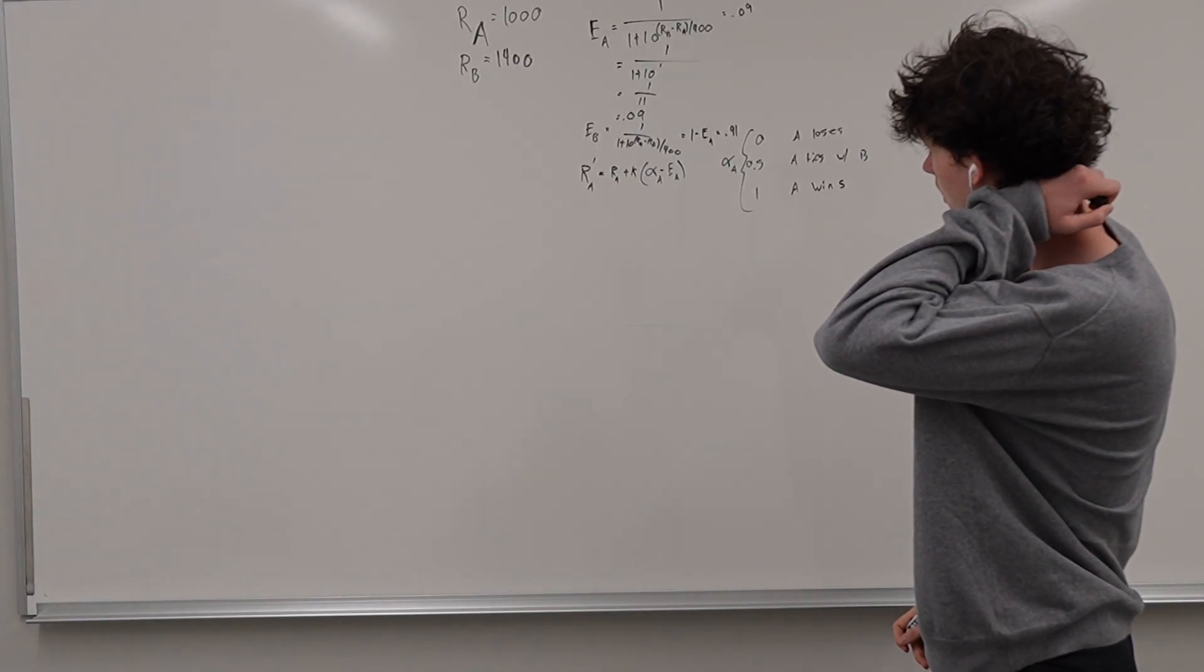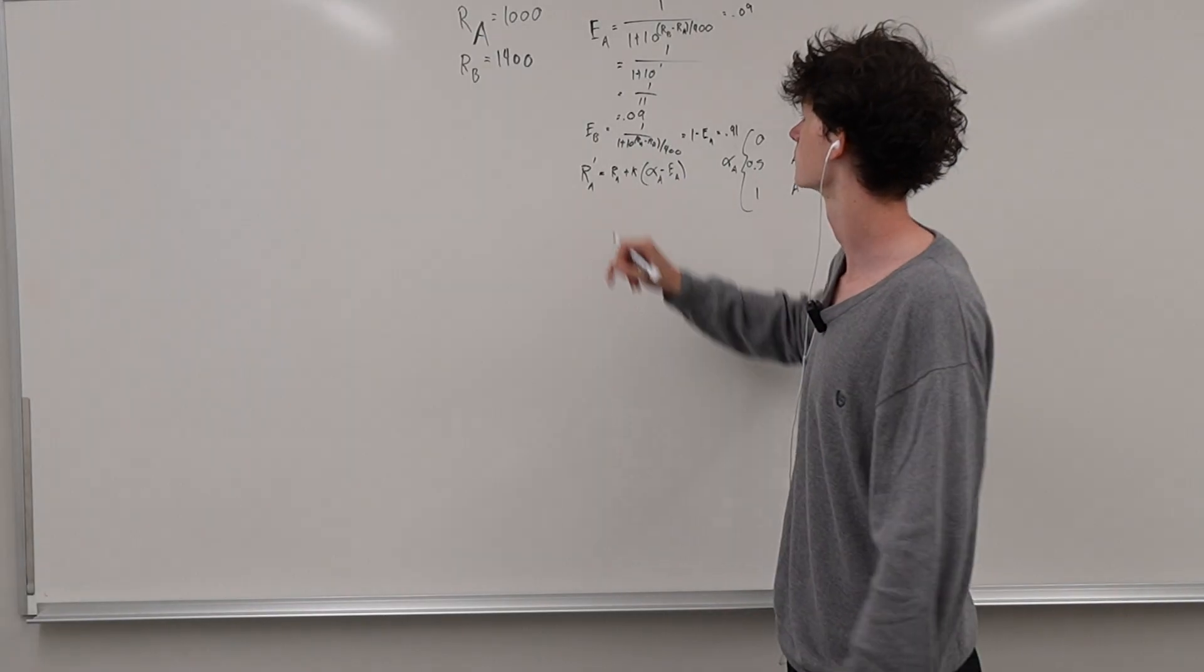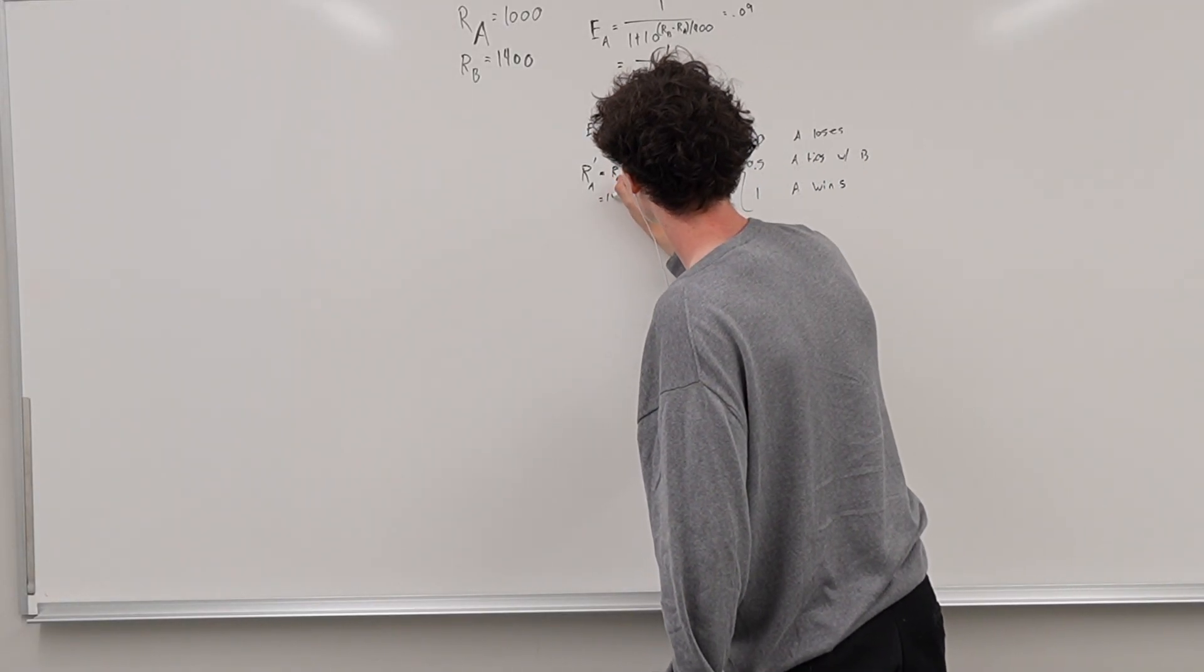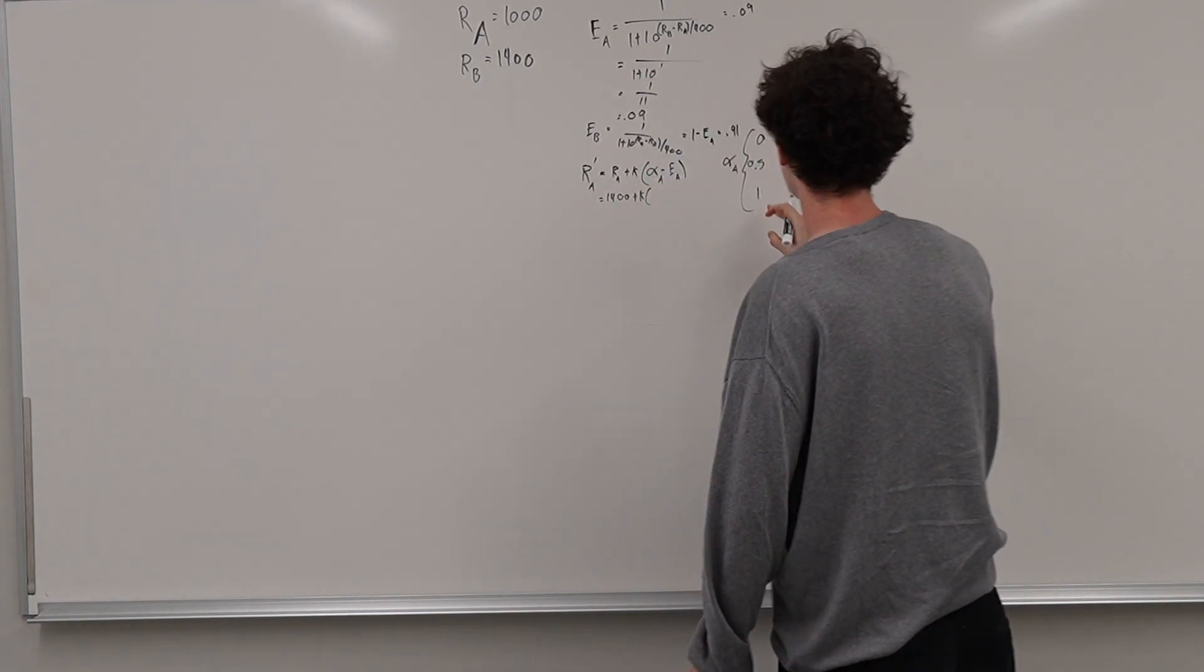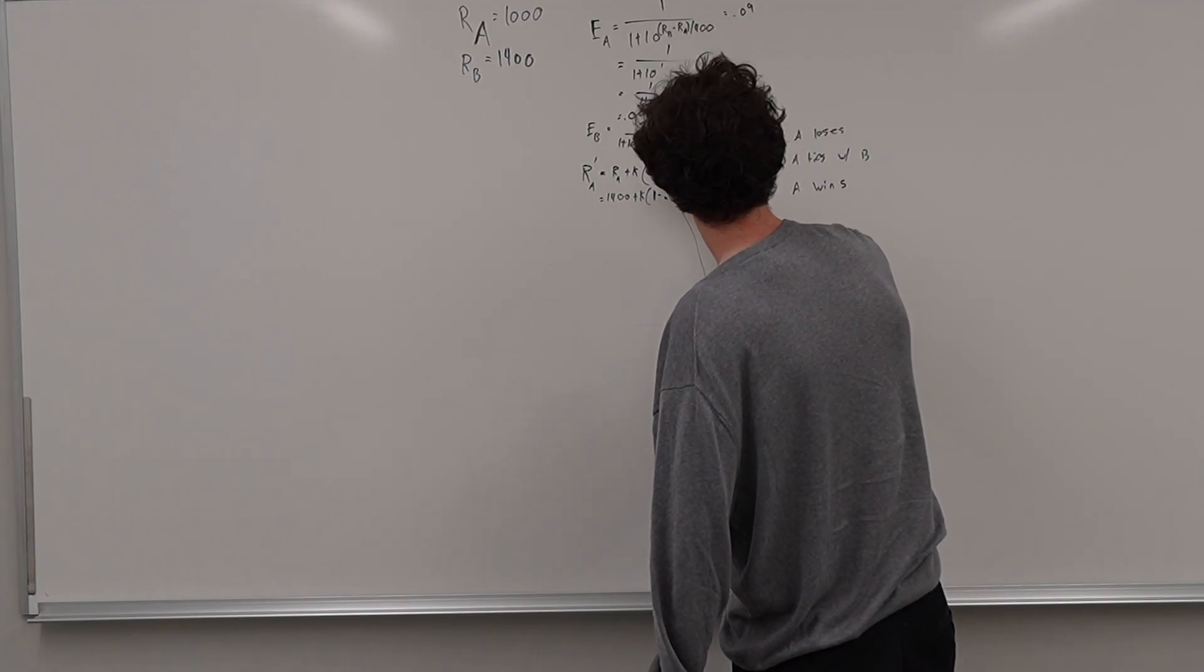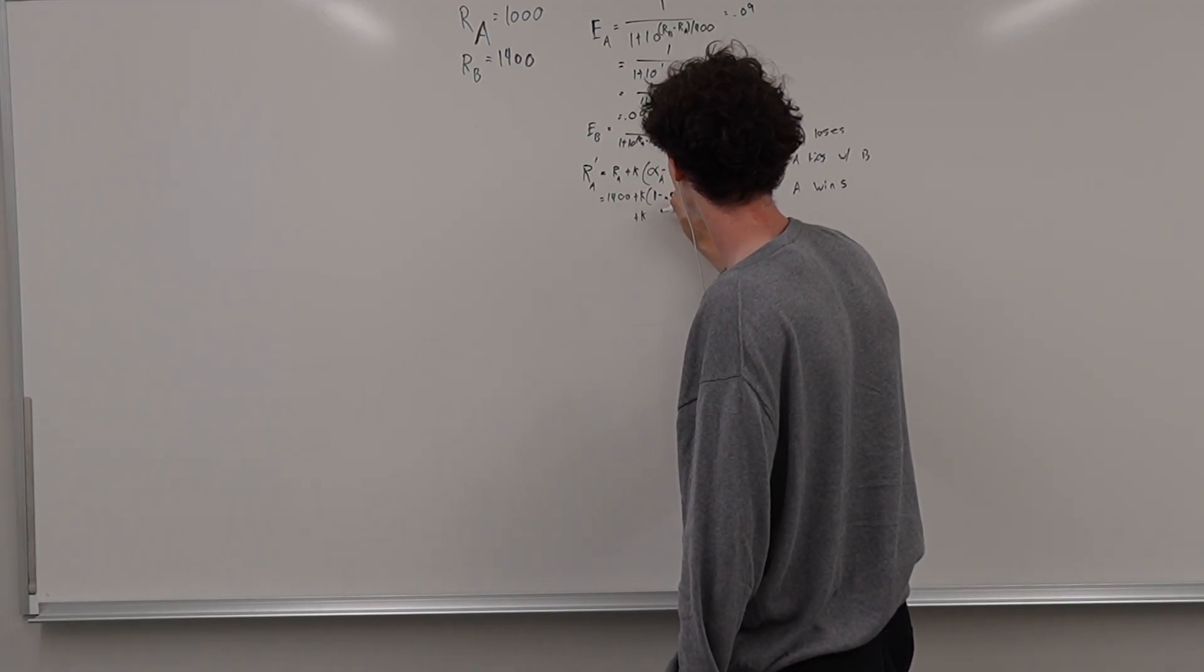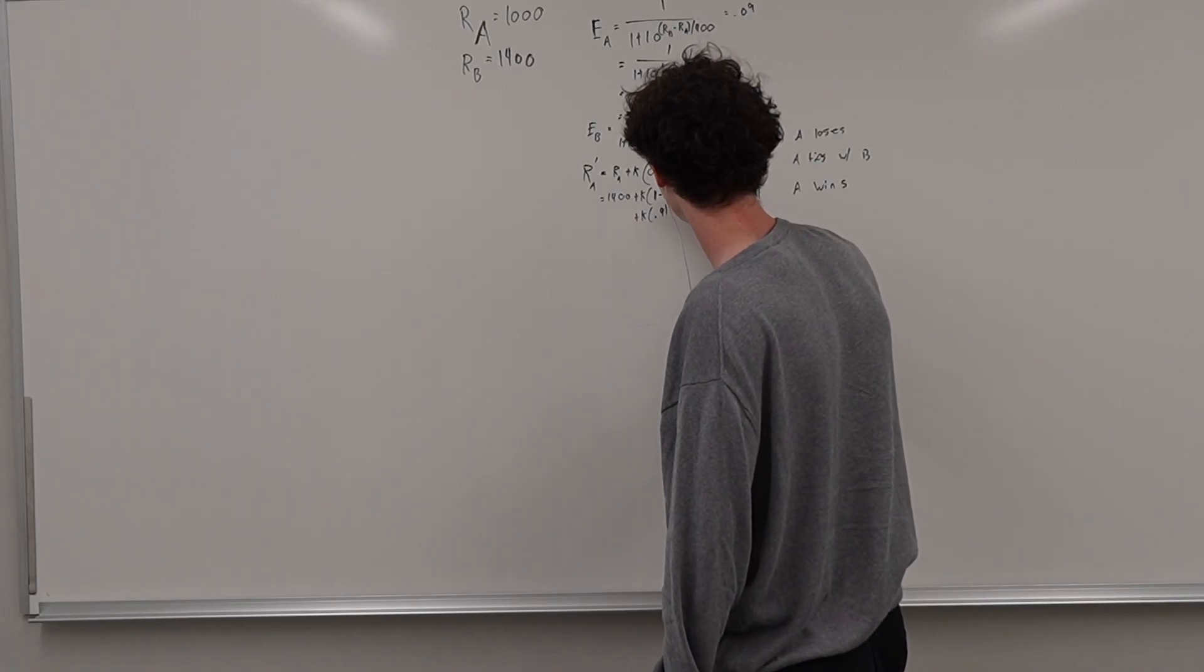So let's make it interesting. And let's say that person A wins. So the person with a thousand rating beats the player with a 1400 rating. So we're going to update the original rating, 1400 plus k times player A wins. So alpha A is one, one minus 0.09. So it's going to be plus k times 0.91.